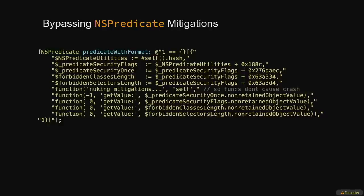All these techniques can be seen in a predicate that disables all the security mitigations introduced to predicates. First, we use self.hash to get the address of the NSPredicateUtilities class — 'hashtag self' gets a reference to NSPredicateUtilities and .hash converts it to an NSNumber. With offsets from this address, we can get the addresses of the security flags and denylist lengths, then use getValue to overwrite them, reverting NSPredicates to their previous fully unrestricted state. The MVP of NSPredicate scripts here is nonRetainedObjectValue — a method that takes an NSNumber and treats it as a pointer to an object, like dereferencing — useful for accessing any class by reference when the cast trick is forbidden.